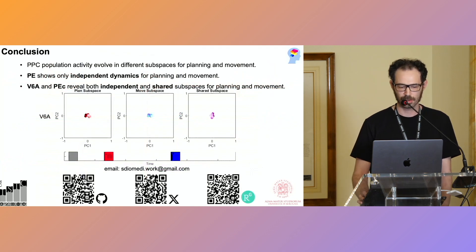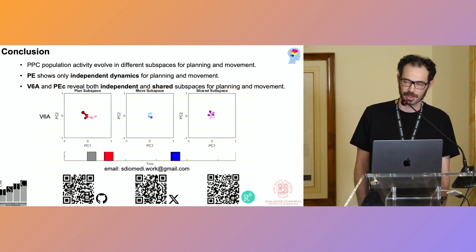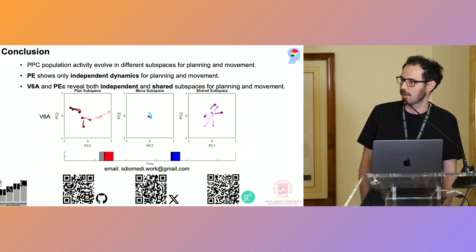So in conclusion, we have shown that the PPC population activity evolved in different neural subspaces in order to make different computations.